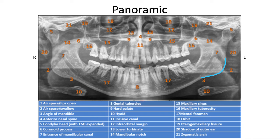After tracing around the outer structures, I go to the teeth and first count all of them — see how many there are, if anything is missing, if anything is extra. Then look at the crowns, look at the bone levels, and then look at the roots of all the teeth. After all of that, you have a pretty good idea of what's going on.